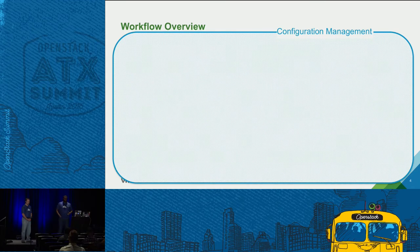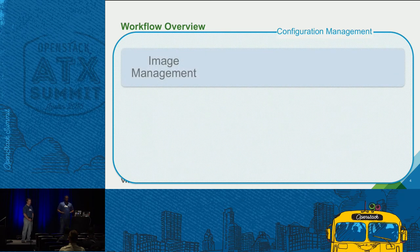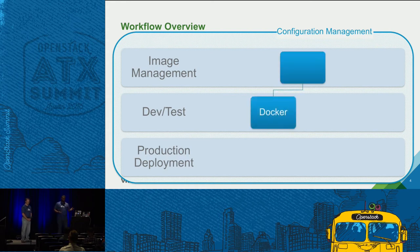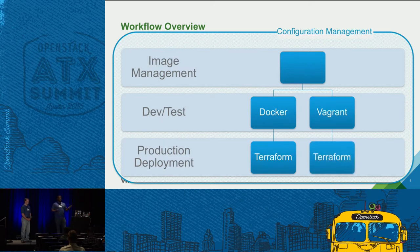The workflow overview: we want software developers to understand that OpenStack clouds are available for their use and can be very helpful for their software development practices. It starts with configuration management — making sure whatever you deploy on your laptop runs exactly the same way in production. Along the way you can incorporate image management with Packer, dev and test with Docker Machine or Vagrant if you're not running a container-based workload, and then production deployment with Terraform.